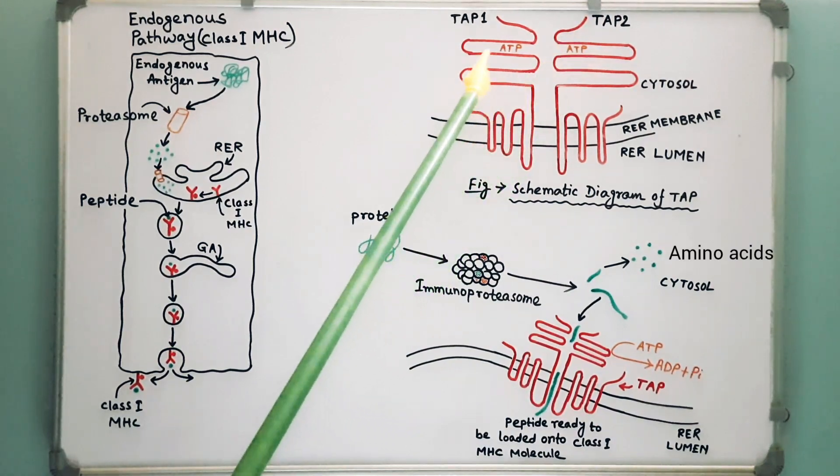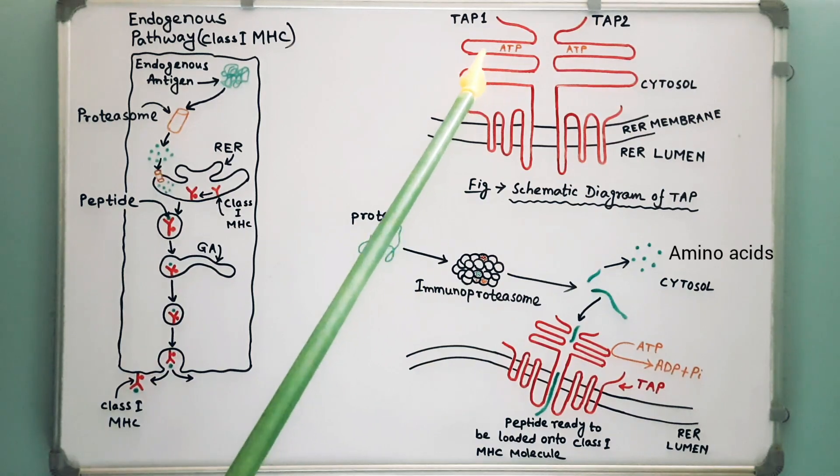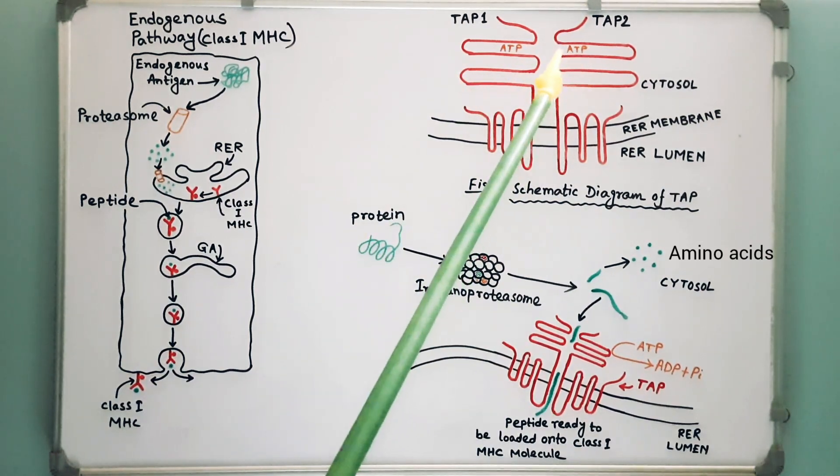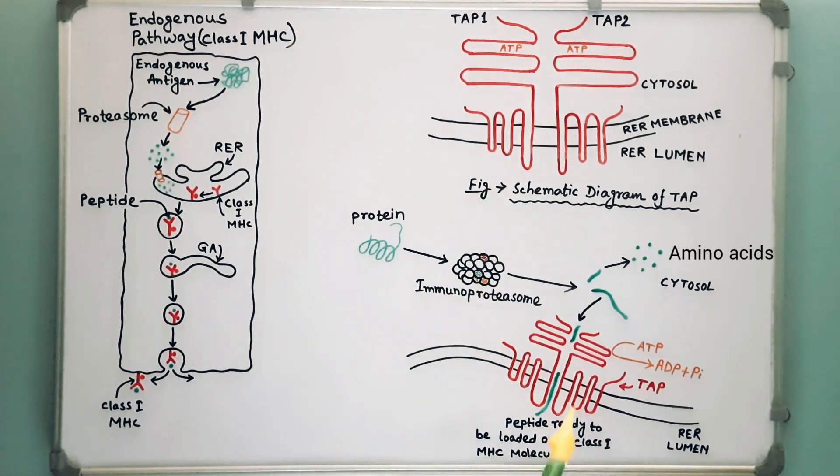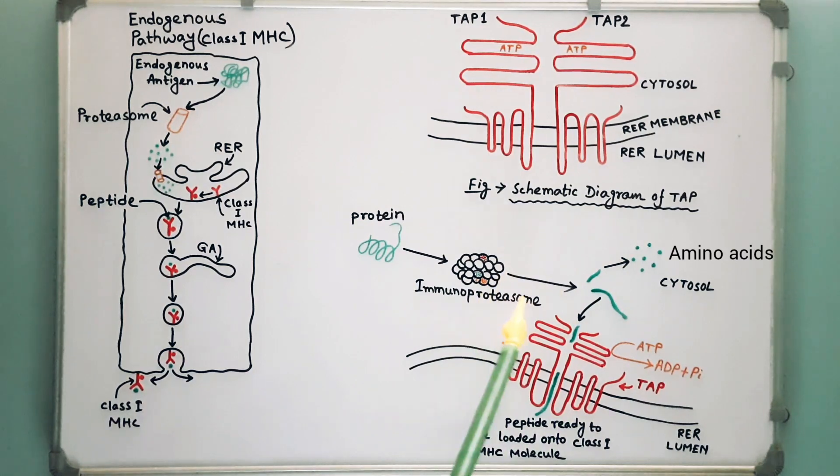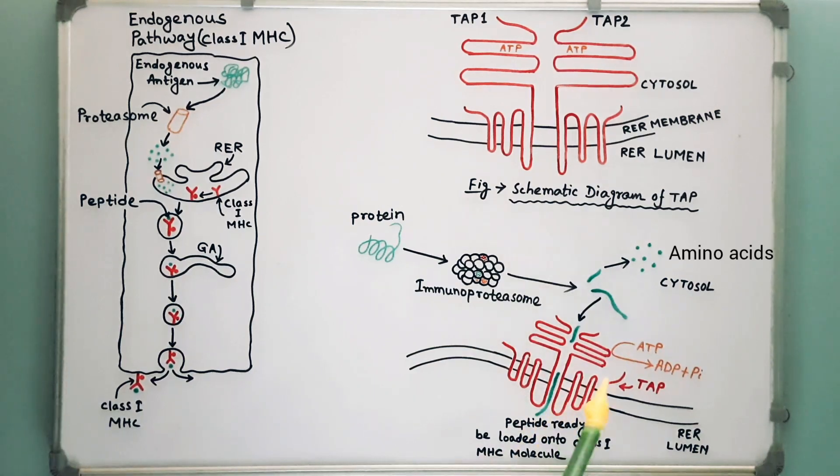The cytosolic domain in each TAP subunit contains an ATP binding site. Peptides generated in the cytosol by the proteasome are translocated by TAP into the rough endoplasmic reticulum by a process that requires the hydrolysis of ATP.